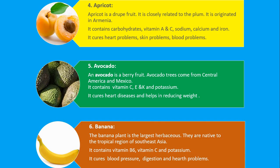Number 6. Banana. The banana plant is the largest herbaceous plant. They are native to the tropical region of South East Asia. It contains vitamin B6, vitamin C and potassium. It cures blood pressure, digestion and heart problems.